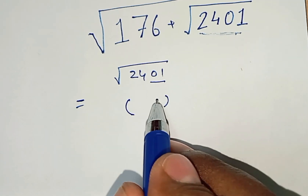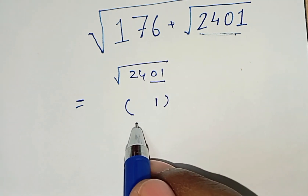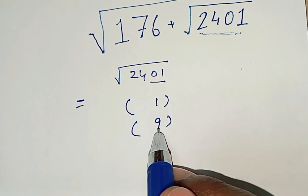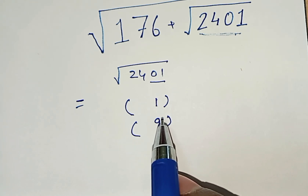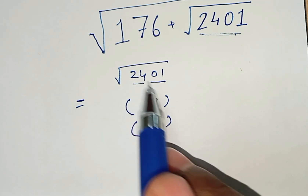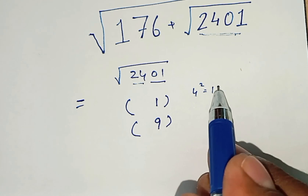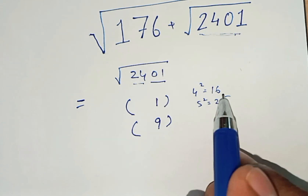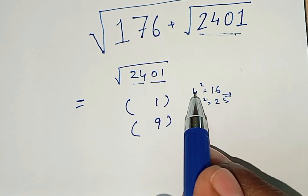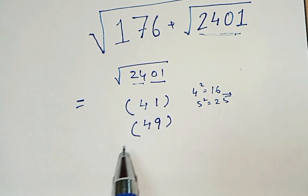Since the last digit is 1, the answer may end in 1 or 9, because 1² = 1 and 9² = 81. Now look at the first group: 24. Since 4² = 16 and 5² = 25, and 24 is in between these two, the lower number is 4. So the answer may be 41 or 49.